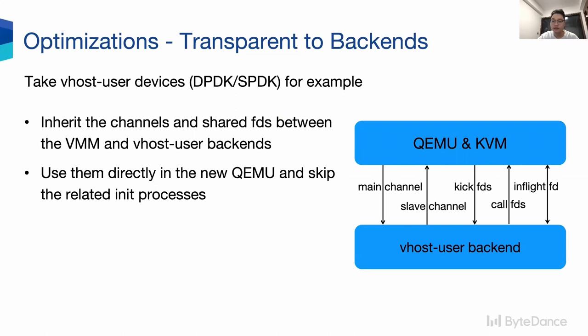Let's take the vhost user devices — DPDK and SPDK — as examples. As we said before, we can inherit any FD from the old QEMU by using the no-close-exec flag. So here, for vhost user devices, we inherit channels — specifically main channels and slave channels — and shared FDs, mainly KICK and CALL FDs, and in-flight FDs of SPDK between the VM and the vhost user backend. Then we will use them directly in the new QEMU and skip the related init processes.